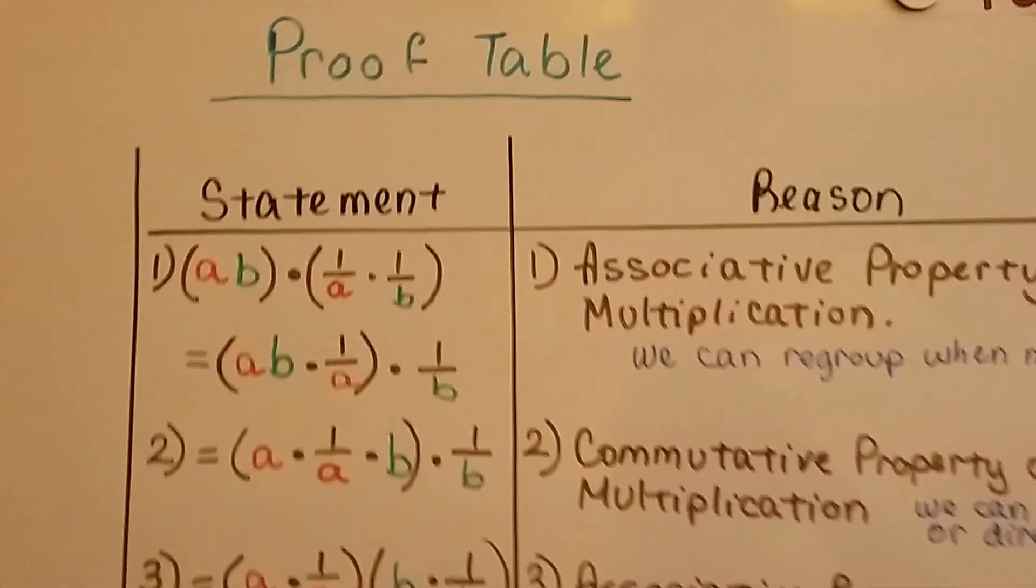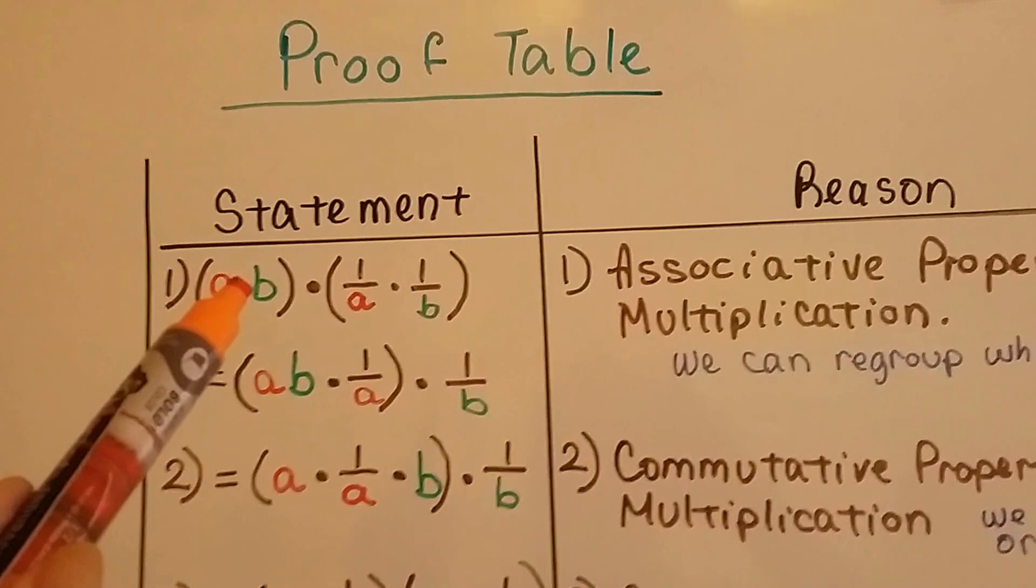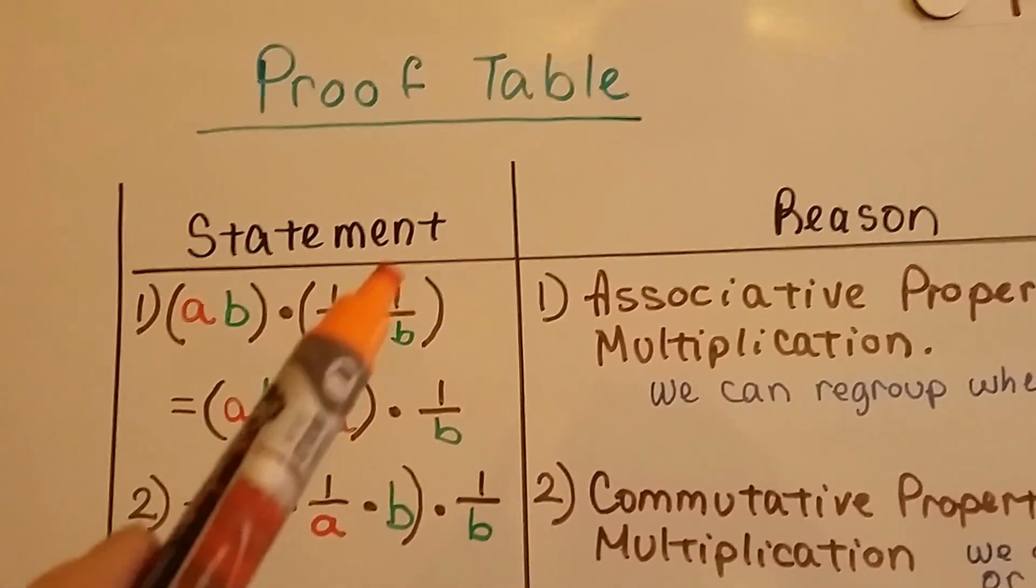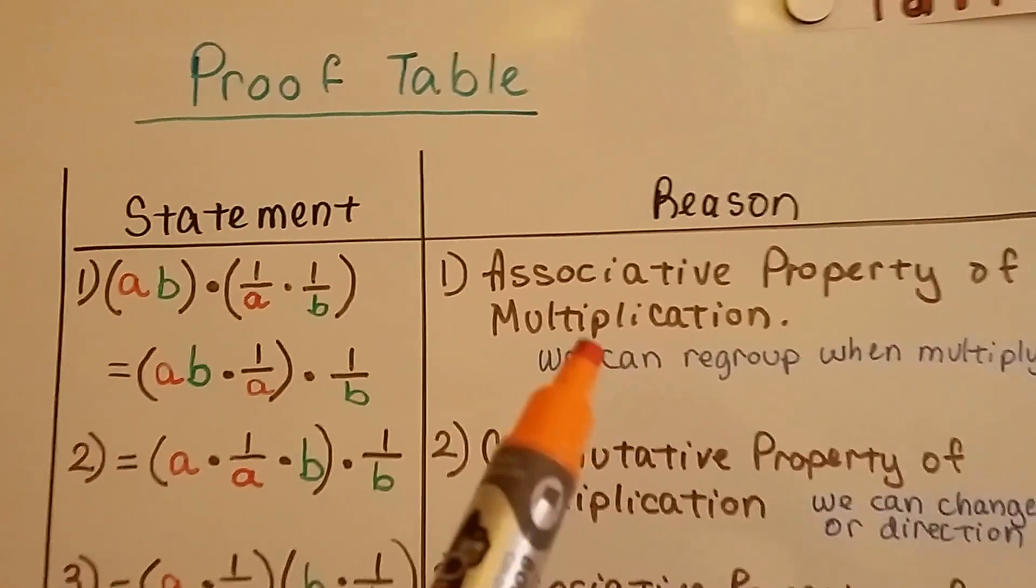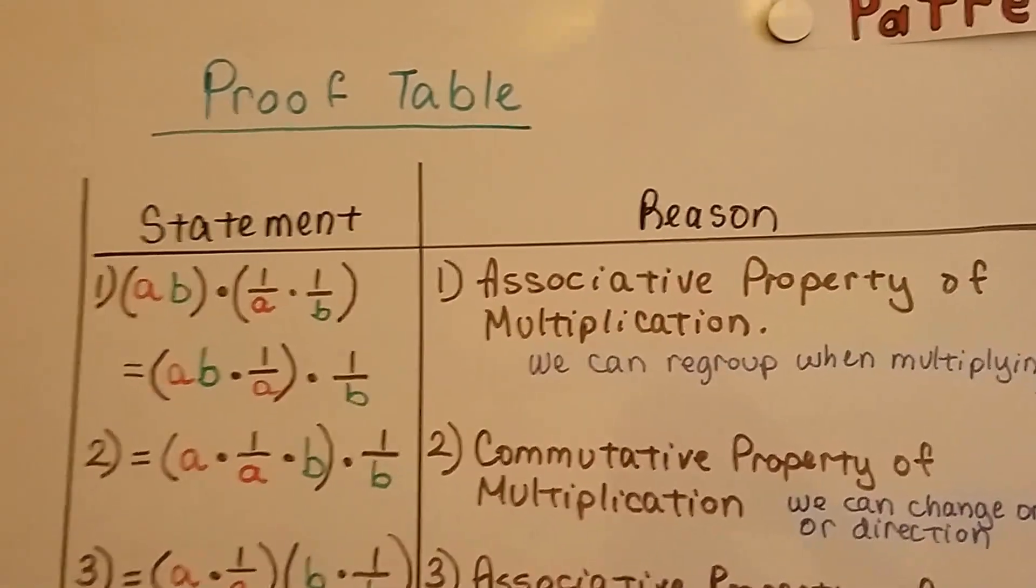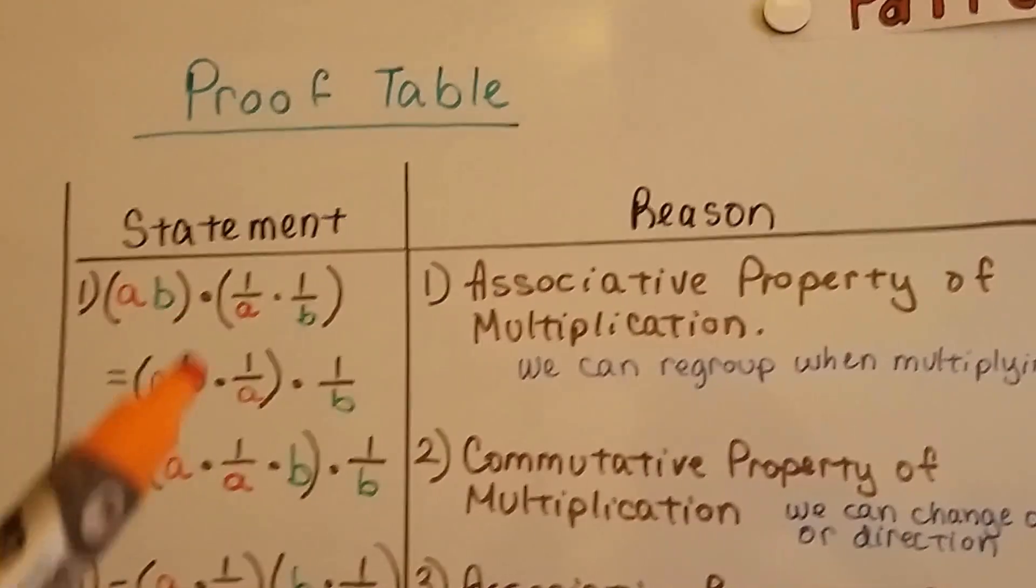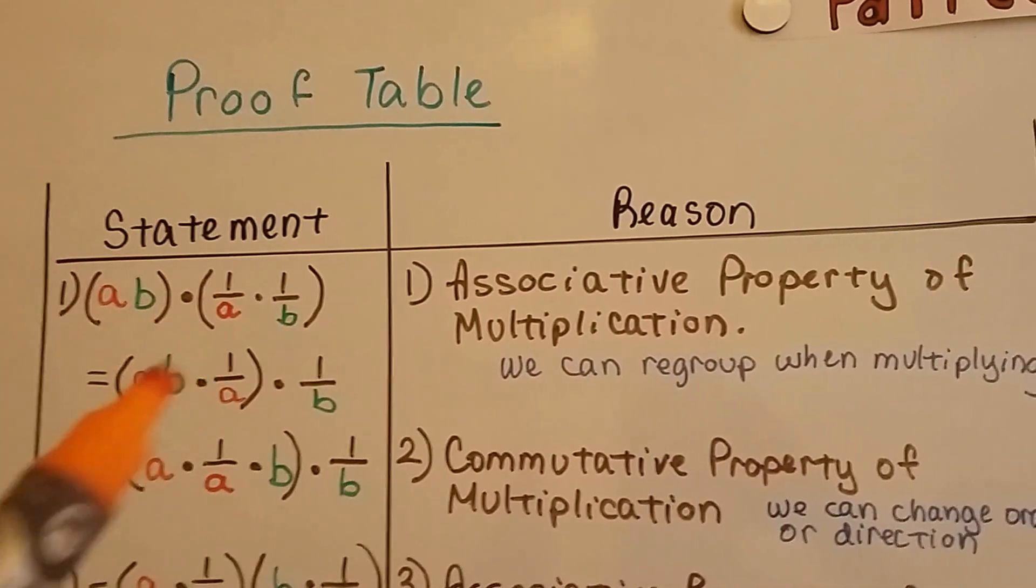The first thing we're going to say is if you've got a times b and you're multiplying it by 1 over a times 1 over b, the associative property of multiplication says we can regroup it when multiplying. So we can actually say ab times 1 over a. We moved the parentheses.